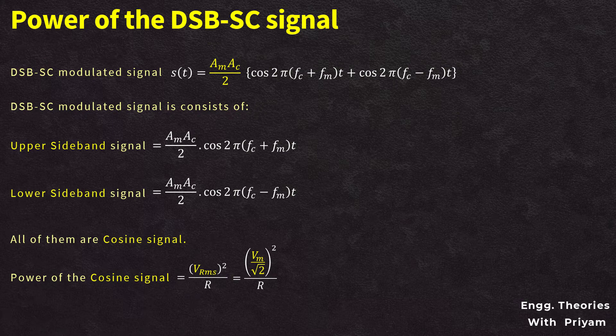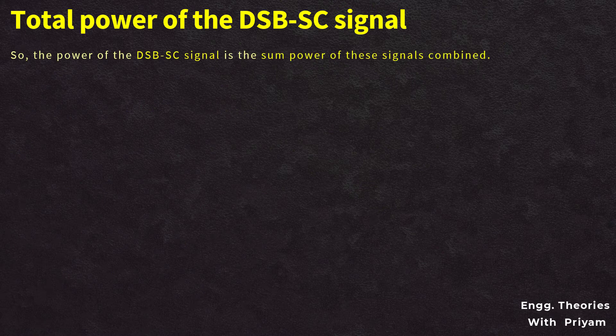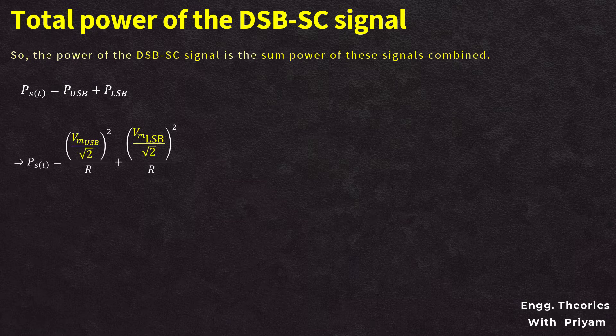All of these are cosine signals. The power of a cosine signal is P = V_rms²/R, and since V_rms = Vm/√2, the power equals (Vm/√2)²/R. Since the DSBSC signal is the sum of two sidebands, the total power PST = P_USB + P_LSB.